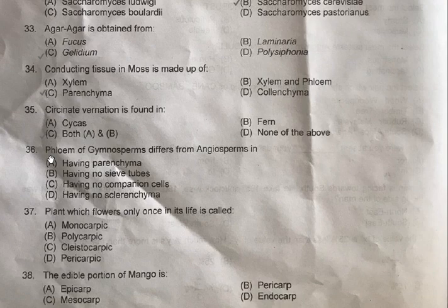Question 36: Phloem of gymnosperms differs from angiosperms in — A: Having parenchyma, B: Having no sieve tubes, C: Having no companion cells, D: Having less sclerenchyma. The correct one is having no sieve tubes, that means option B.